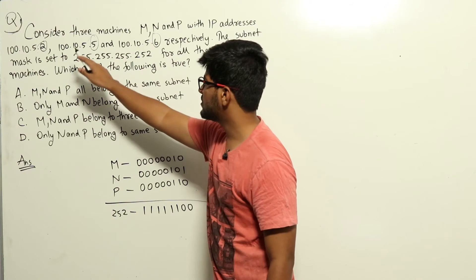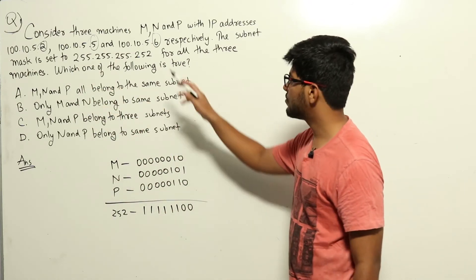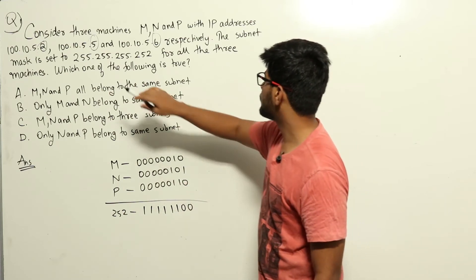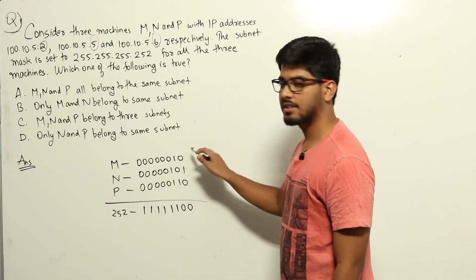For M, the last 8 bits is 2, that is 00000010. Similarly, for N, it is 5, that is 00000101. And for P, it is 6, that is 00000110 as given here.